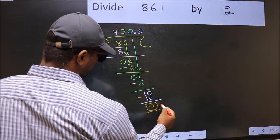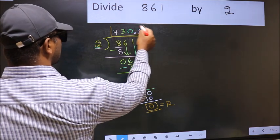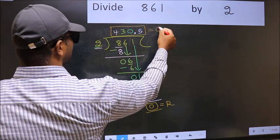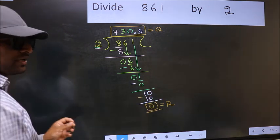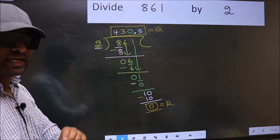So this is our remainder. And this is our quotient. Did you understand where the mistake happens? You should not do that mistake.